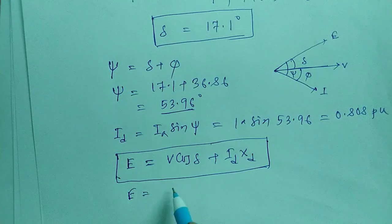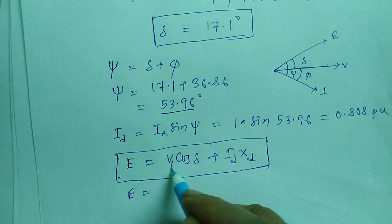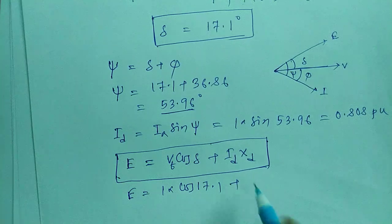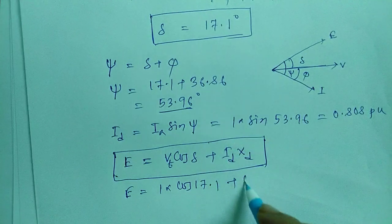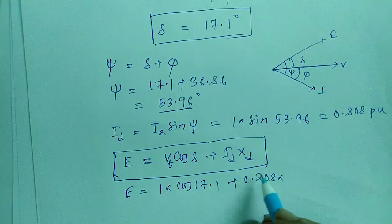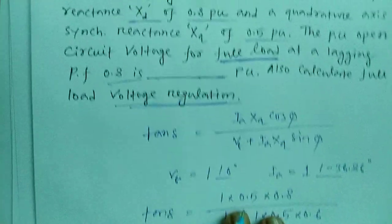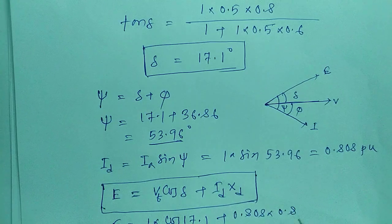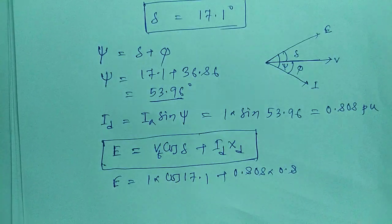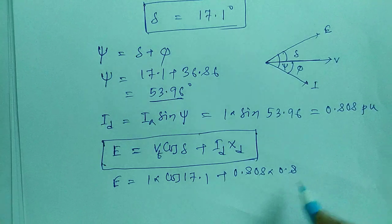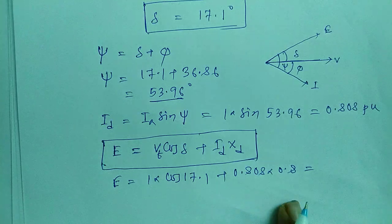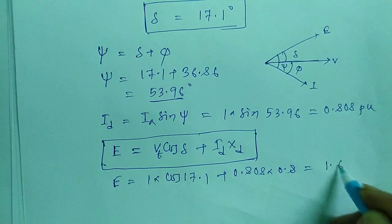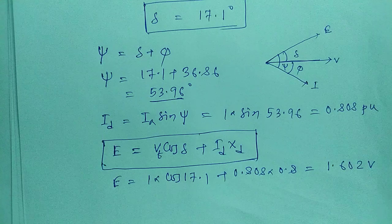So let's solve. E = Vt · cos(δ) + Id · Xd. Vt is 1, cos(17.1°) gives us that term, and Id is 0.808, Xd is 0.8. Calculating this gives the value of E equal to 1.602 per unit. This is the first answer to the question.